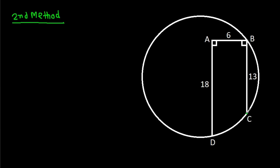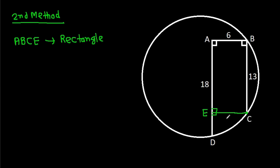The second method. From point C, if we make a perpendicular on AD, suppose this point is E, then ABCE will be a rectangle. So CE will be 6. And we have AD is 18 and AE = BC = 13, so DE will be 5.